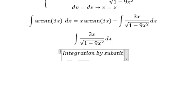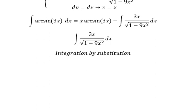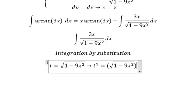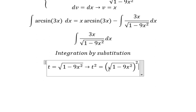So I will set t equals to the square root of 1 minus 9x squared. Later we need to square both sides to cancel the square root, and that gives us t squared equals 1 minus 9x squared.